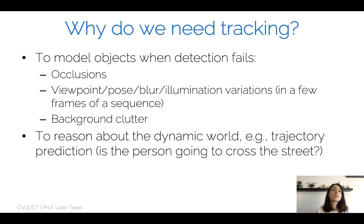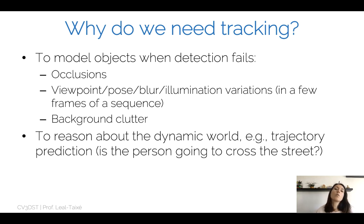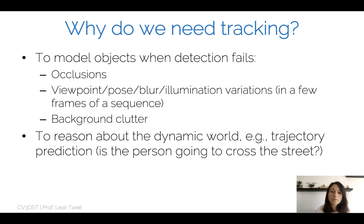You might ask why do we need tracking if we have strong detectors. Well, it turns out that I need to model the temporal aspect of objects — how they move — in case detection fails. For example, when the object goes through occlusions, it would be nice to have an idea of where the object might be. The same applies when there is a viewpoint change, a pose change, motion blur, or illumination changes — all kinds of artifacts that might make our detector fail. In this case, tracking gives us an idea of where the object might be given the previous trajectory.